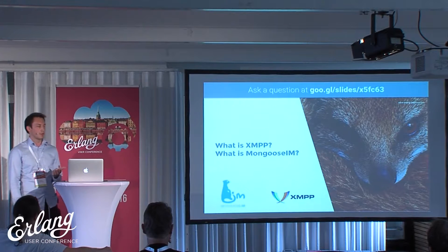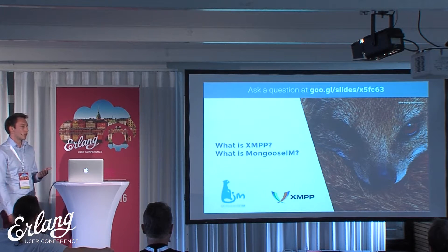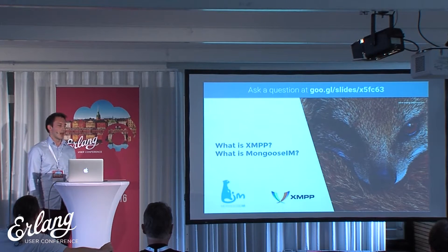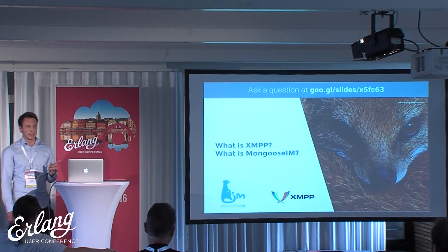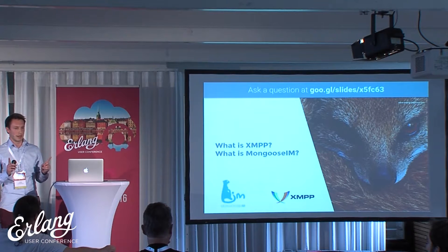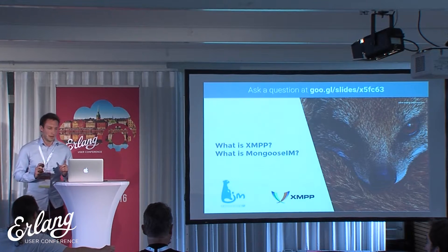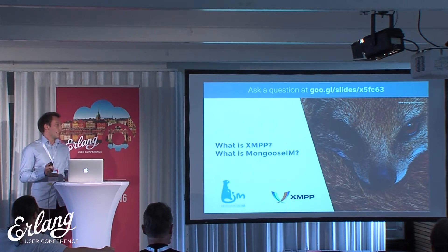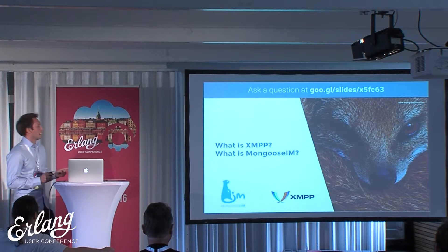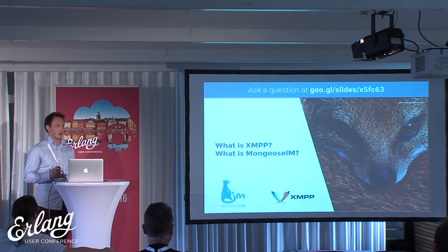XMPP is secure — it comes with strong authentication methods and built-in TLS support. It's also decentralized, meaning anyone can run their own XMPP server and connect it to the federation of servers. It works as a peer-to-peer connection. Magus.im is the server implementation. It's scalable, robust, and written in Erlang.